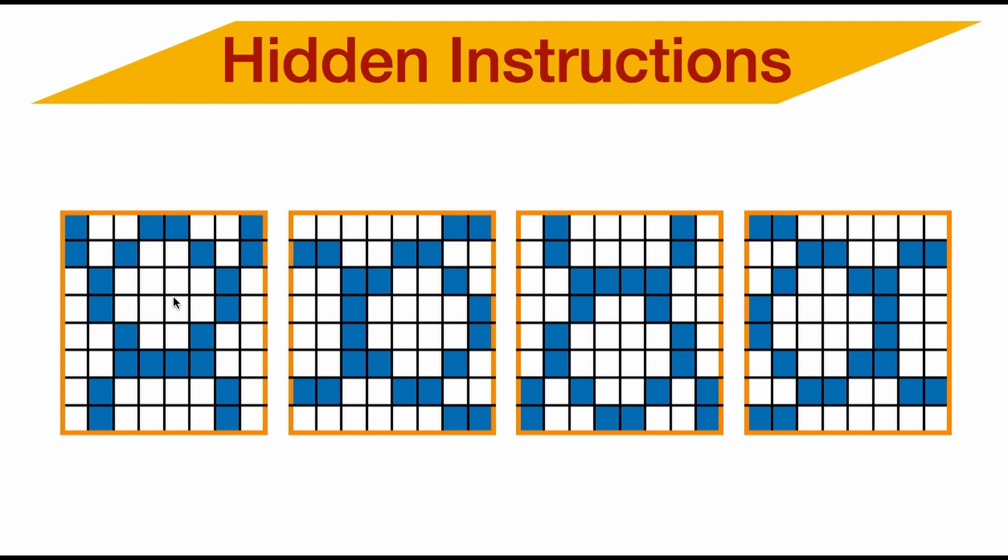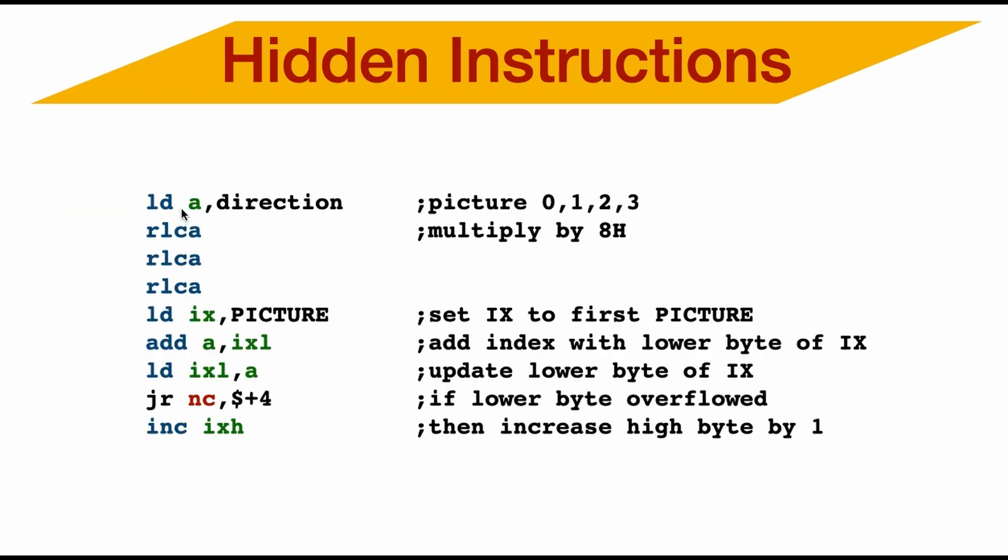You can see here, I've got four sprites of a frog. Well, they kind of look like a frog. This is facing upwards to the right, down and left. The data is sequential and are eight bytes long. If I use IX to reference a picture, there's no official instruction to look at the lower byte or the higher byte of IX. But there is.